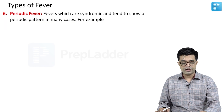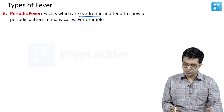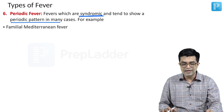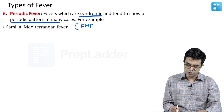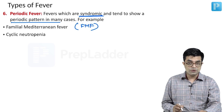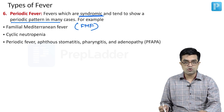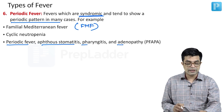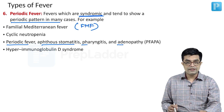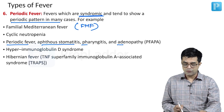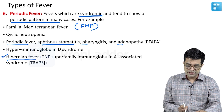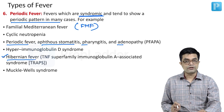Then we have periodic fevers. These are usually syndromic and tend to show a periodic pattern in most cases. A typical example is familial Mediterranean fever (FMF). Others include cyclic neutropenia, PFAPA syndrome — which stands for periodic fever, aphthous stomatitis, pharyngitis and adenopathy — hyper-IgD syndrome, and TRAPS syndrome, which stands for TNF receptor-associated periodic syndrome. TRAPS is also called hibernian fever and can be seen in Muckle-Wells syndrome.